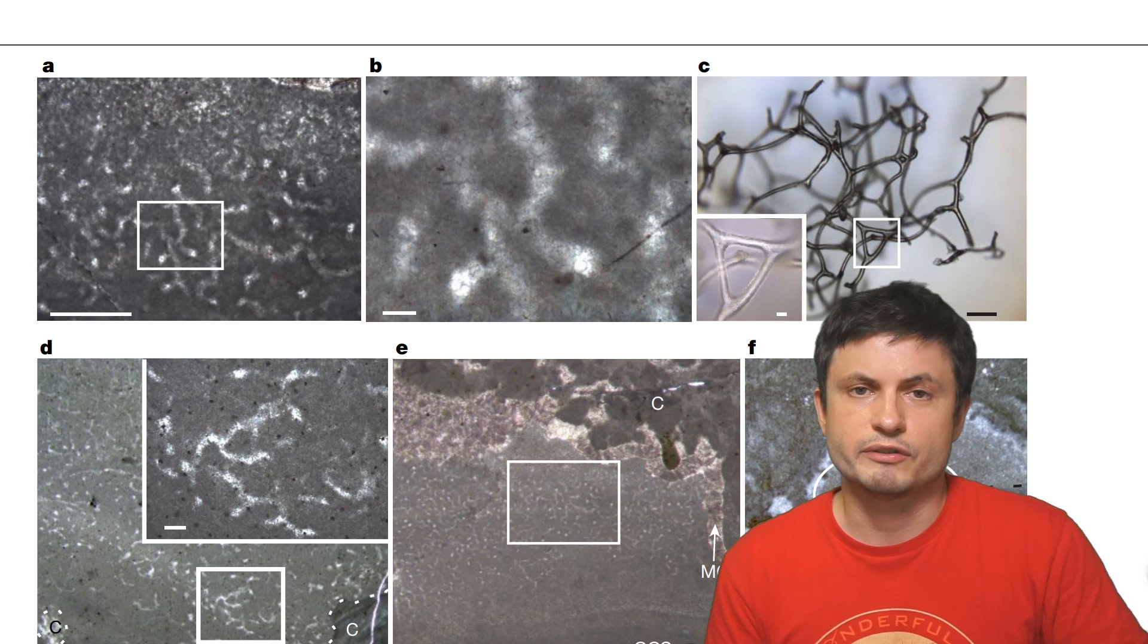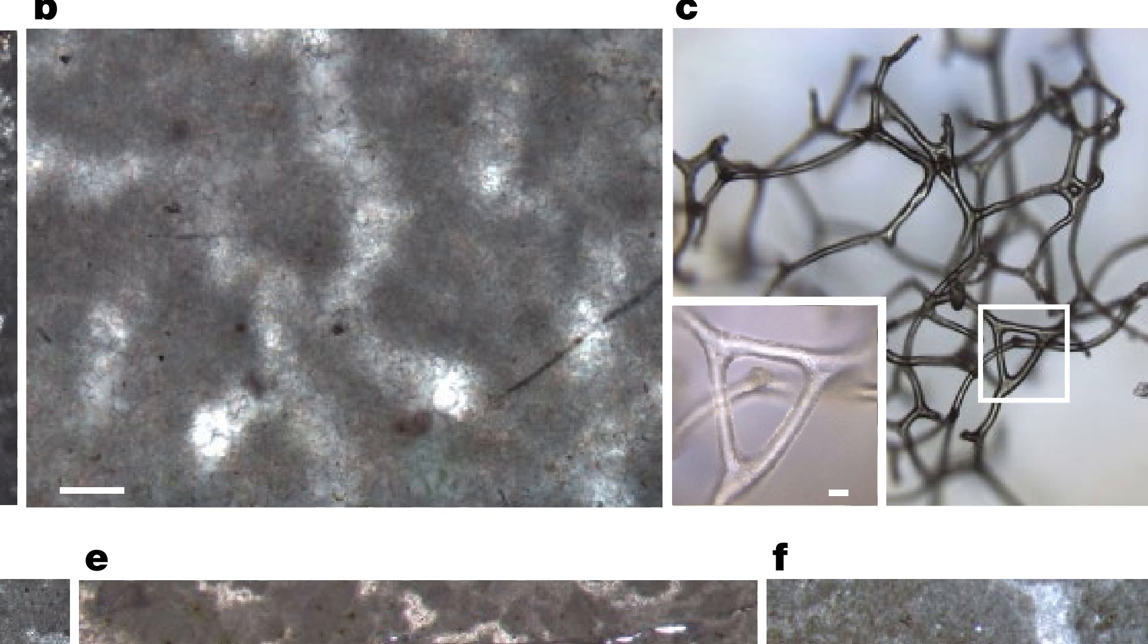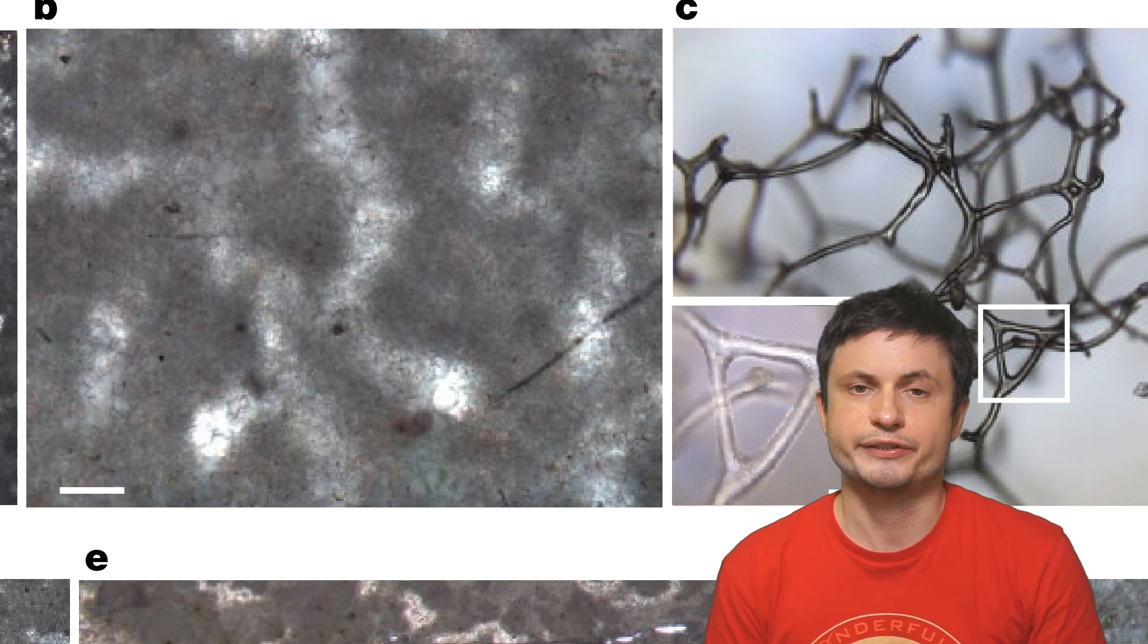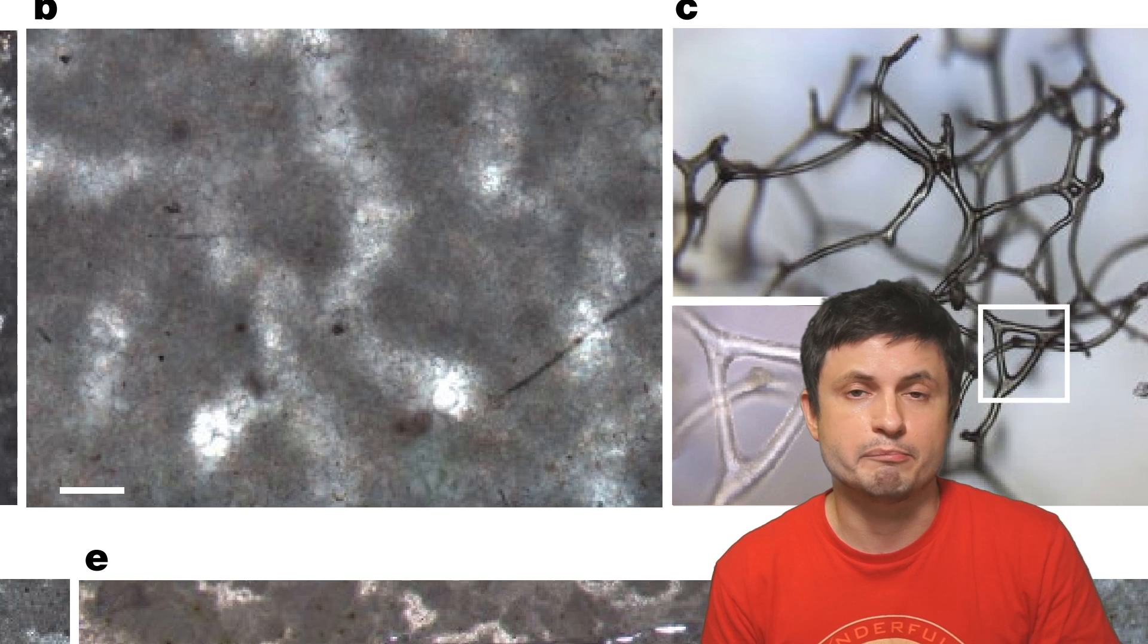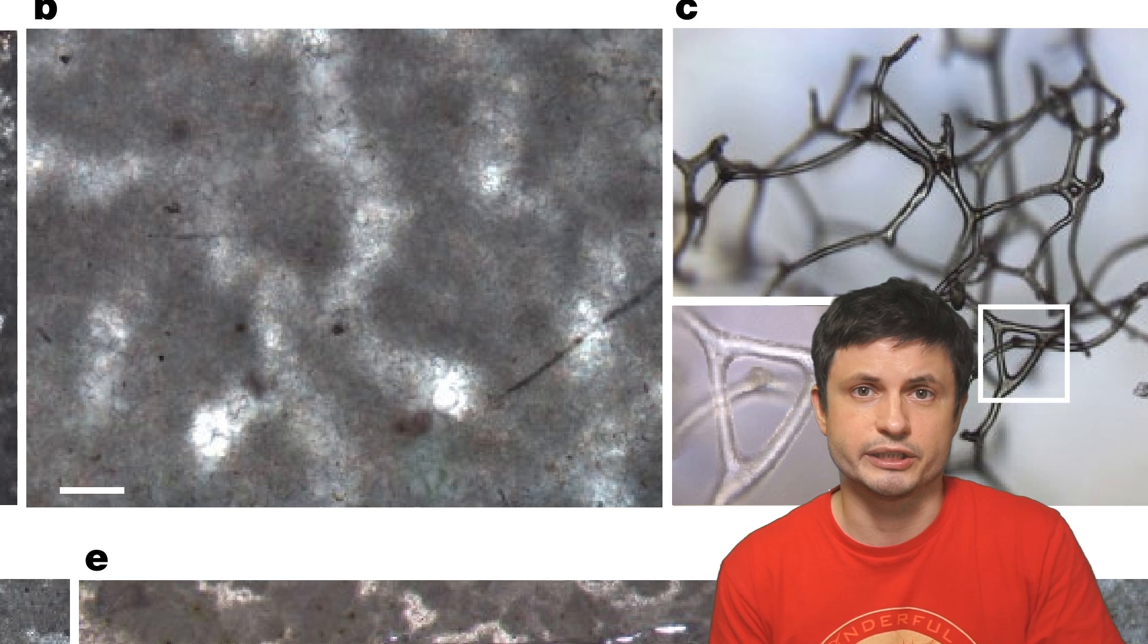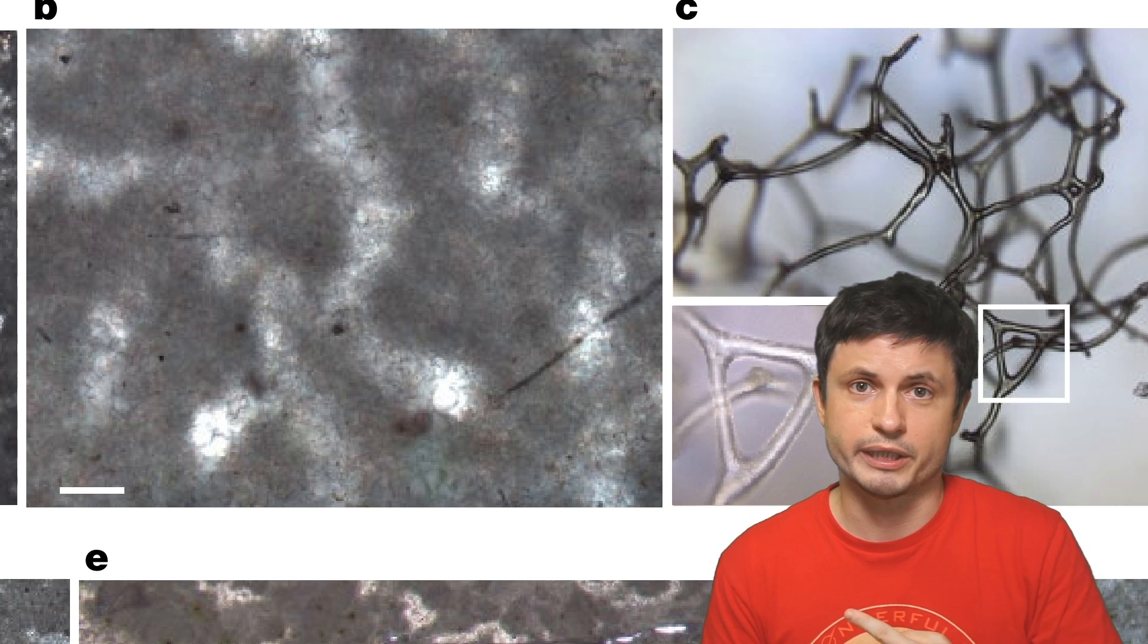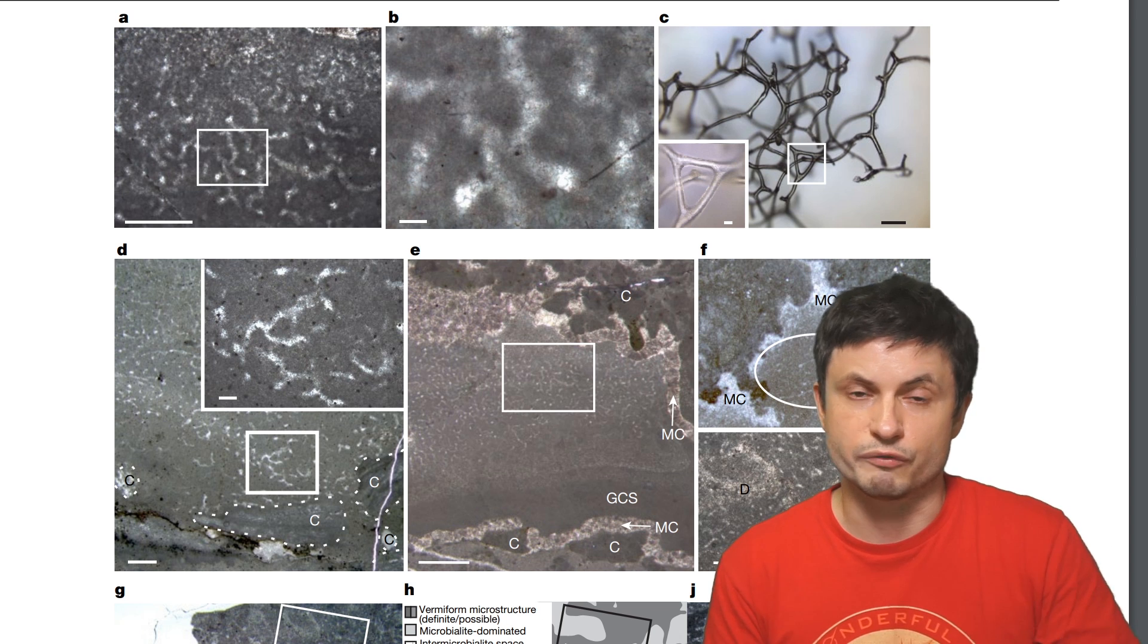Or at least that's what the scientists believed for a very long time. But this newly discovered fossil seems to contradict all of this. And specifically based on these signs of what seems to be some sort of a skeletal structure, the author in the paper does suggest that animal life might have existed approximately 890 million years ago, predating other sponges by about 350 million years.